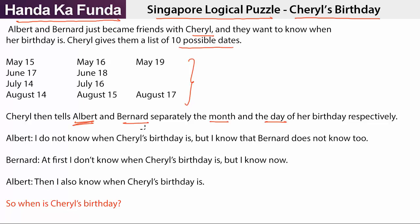Bernard, on the other hand, knows the date. So what are all of Bernard's options? 14, 15, 16, 17, 18, 19. Bernard has essentially heard any of the six possible options.